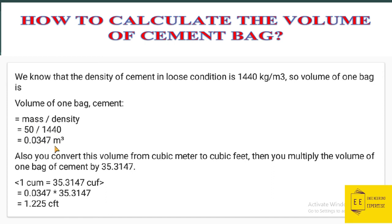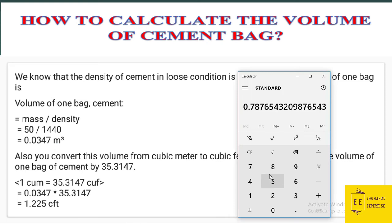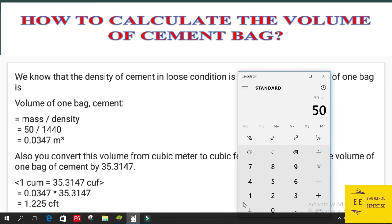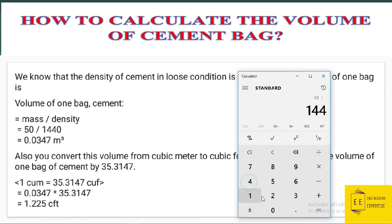We will calculate it on the calculator here. We will see 50 divided by 1440, so it will give us 0.0347 cubic meters. This is the volume of one cement bag.